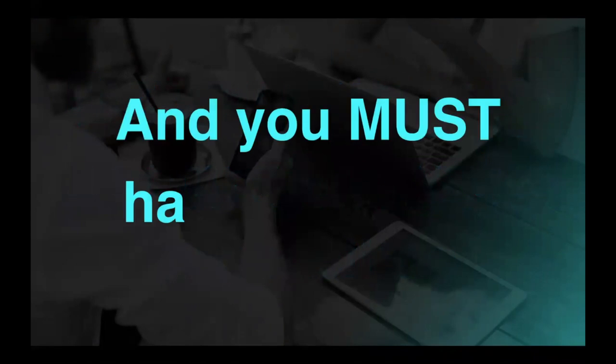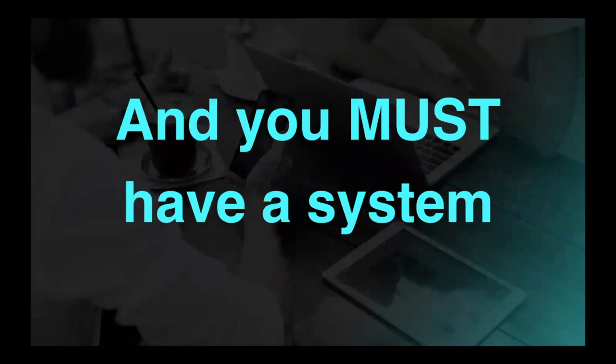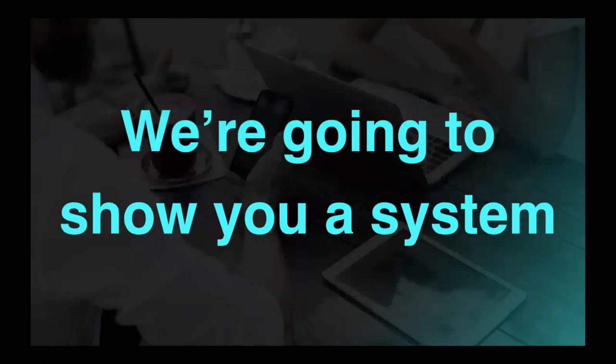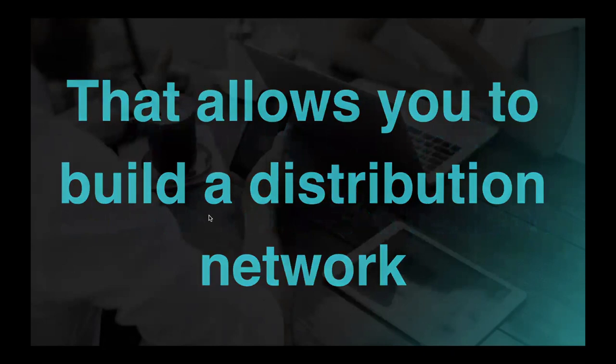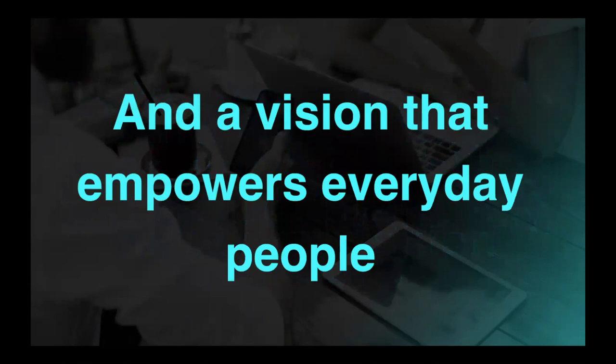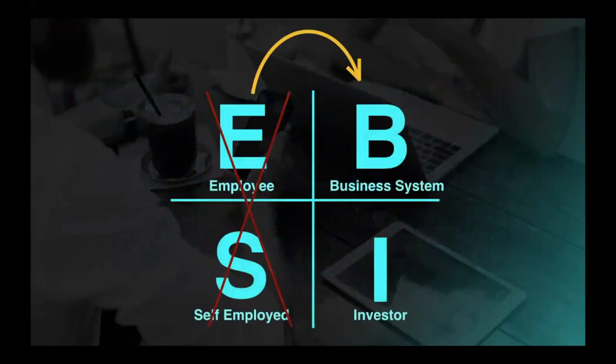Most people just aren't educated or informed and don't take the time to be. One of the things that you need is a compelling value proposition, meaning the company that you're partnering with better have something very compelling, and you have to be able to determine what's compelling and what isn't. The second challenge, you must have a system that allows you to grow, that allows you to attract customers and business partners. Without a system, you're stuck. So that's the challenge we allow you to overcome. We're going to show you a system that allows you to build a distribution network with a company that has a very compelling value proposition, as you'll come to learn in the next video, and that has a vision that empowers everyday people where you're able to create financial freedom because you're no longer trading time for money.